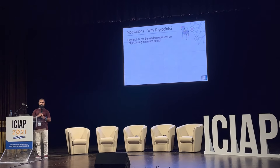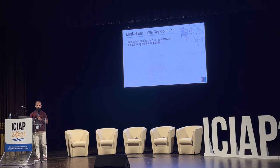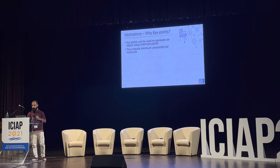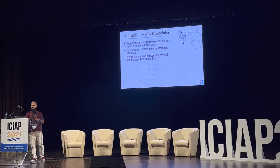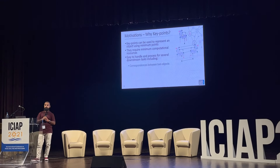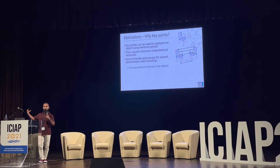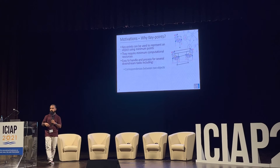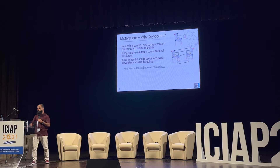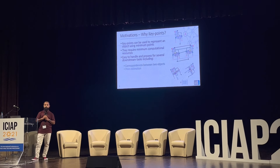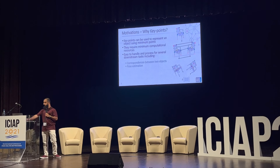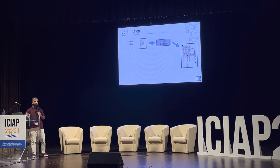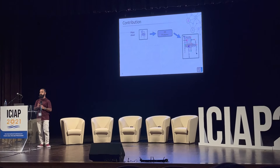Key points can be used to represent an object using a minimum set of points. They require minimum computational resources and minimum time for processing. They are easy to handle for several downstream tasks — for example, finding the correspondences between two objects in a point cloud. We can use these key points for finding the relative pose between two point clouds, as well as for finding shape alignment.